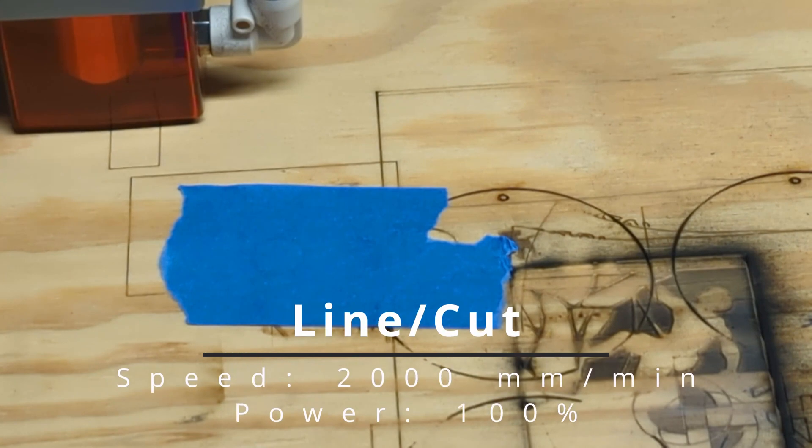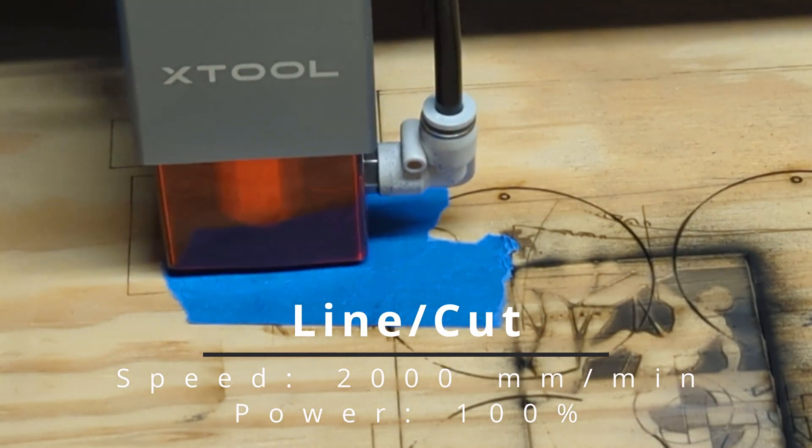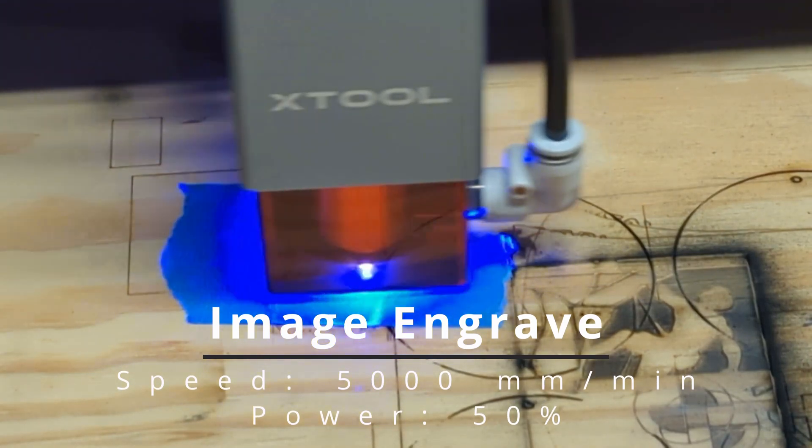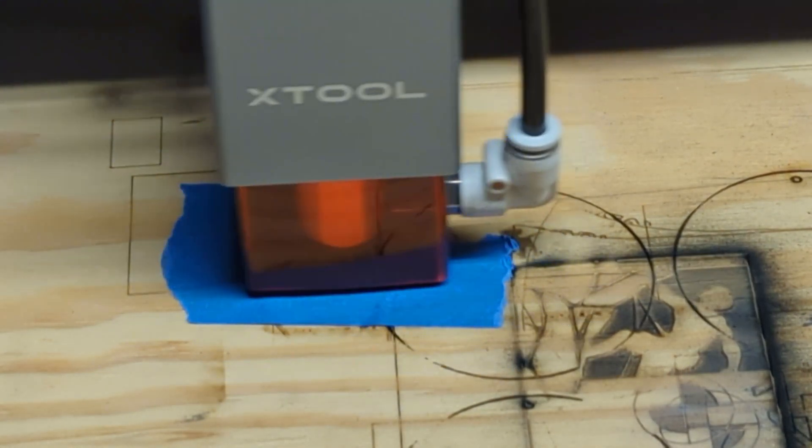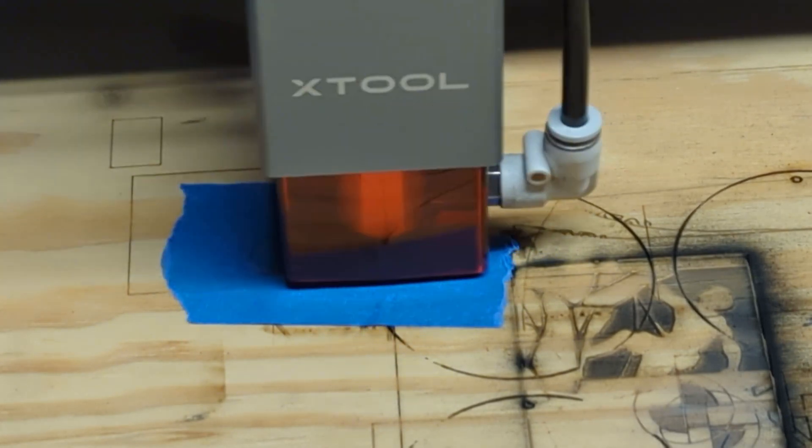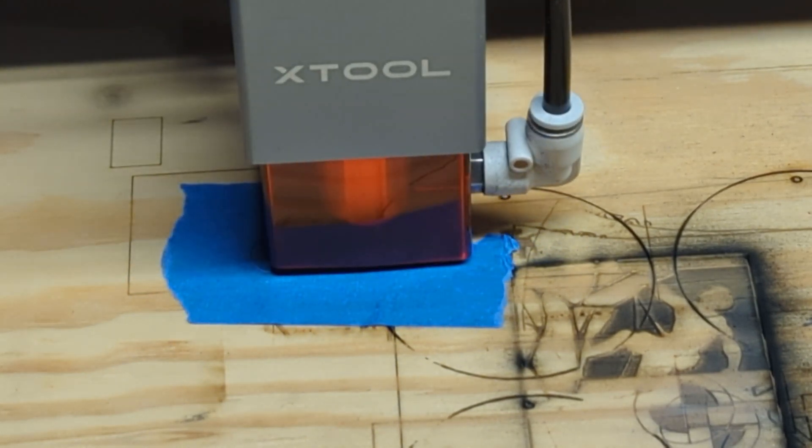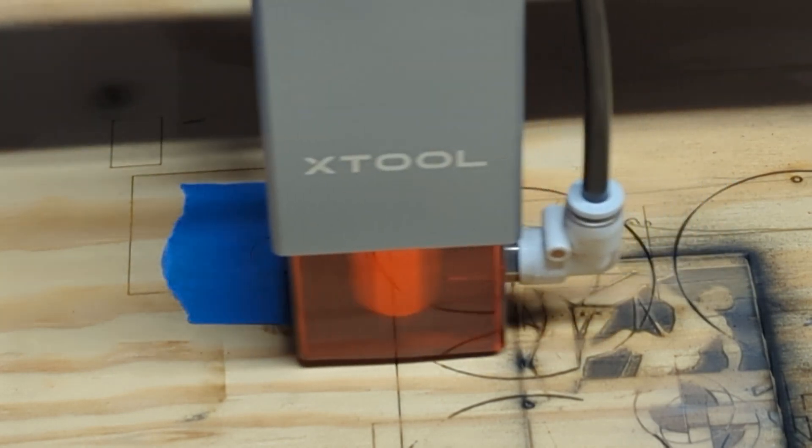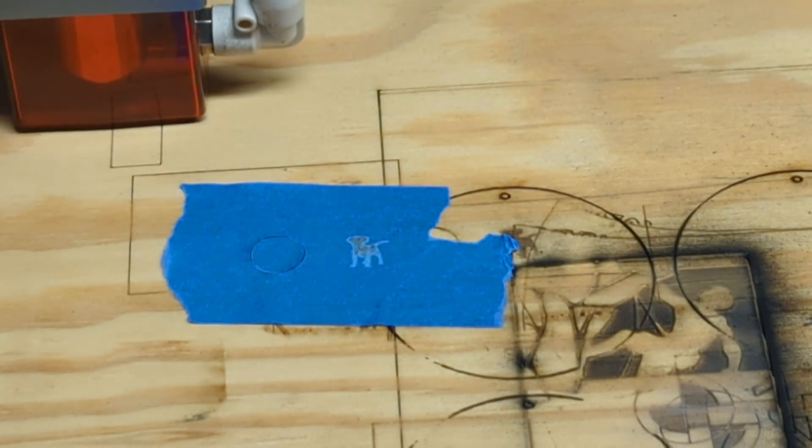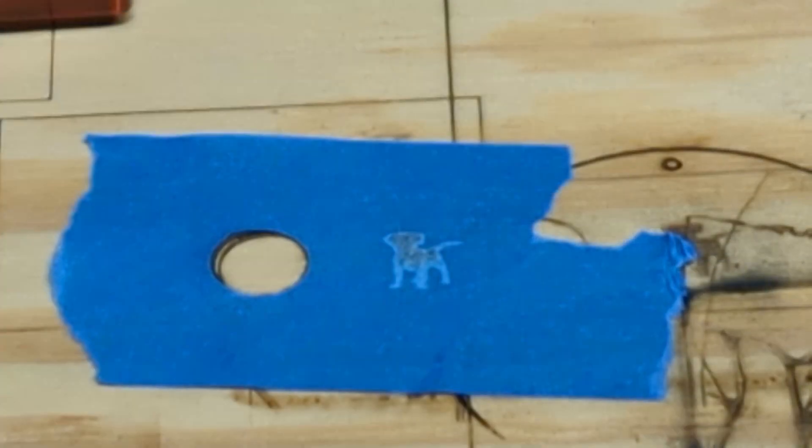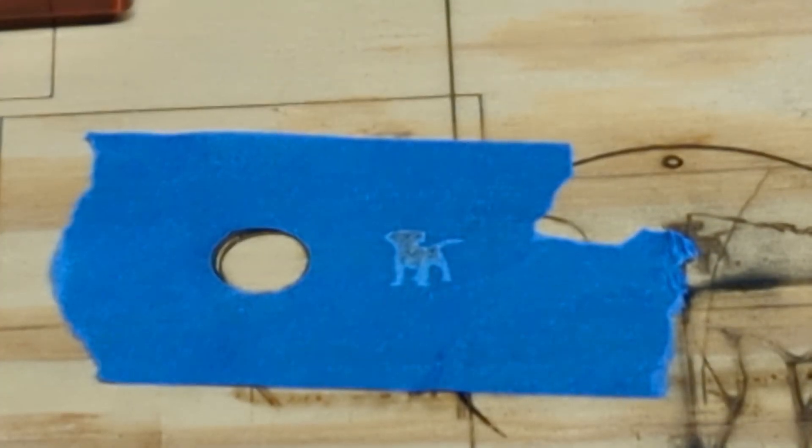Next up we have blue painters tape. You know it, you love it. Some people use this as a mask when they're cutting wood in order to keep the char and soot from making their lines look not so clean. Given how easily it cuts through the tape, I could see this being used as a stencil if you wanted to say cover your board in some tape, cut out your design, and then peel the parts back and paint through it. The engraving didn't go all the way through, which is good. I think you could refine it, but I don't know why you would ever want to engrave an image on blue painters tape to begin with.